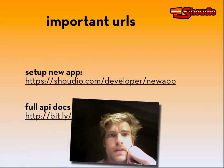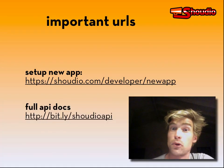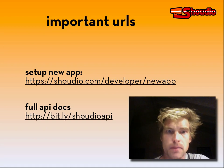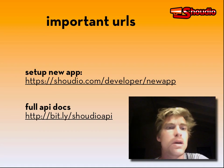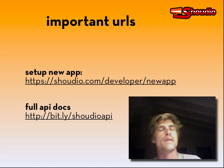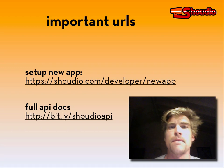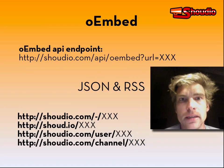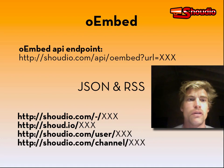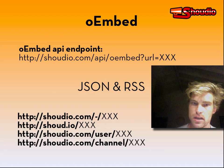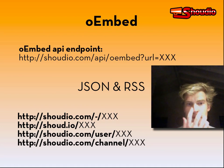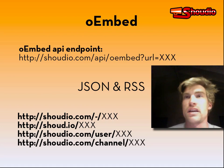The important URL for setting up a new app is xaudio.com/developer/new_app. The full API documentation can be found at bit.ly/xaudio_api. Regarding oEmbed — it's a standard for exchanging a given set of URLs.